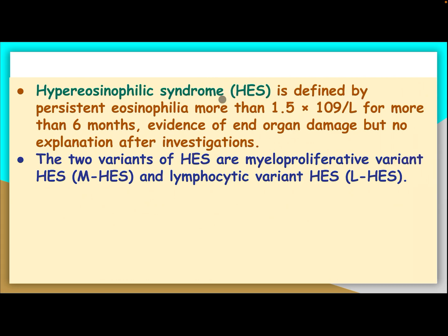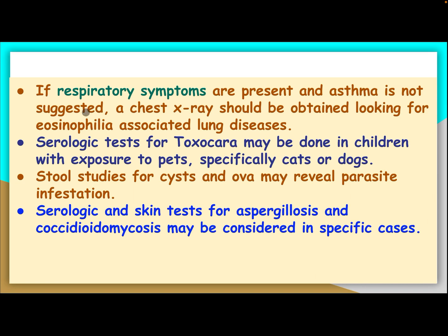Hypereosinophilic syndrome is defined by persistent eosinophilia more than 1500 cells for more than six months, evidence of end-organ damage, but no explanation after investigation. The two variants are the myeloproliferative variant (M) and the lymphocytic variant (L). If respiratory symptoms are present and asthma is not suggested, chest x-rays should be obtained looking for eosinophilia-associated lung disease. Serologic tests for Toxocara may be done in children with exposure to pets, especially cats or dogs. Stool study for cysts and ova may reveal parasitic infestation. Serological and skin tests for aspergillosis and coccidiomycosis may be considered in specific cases.